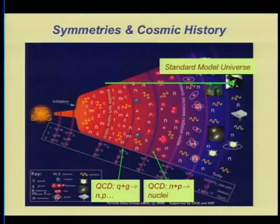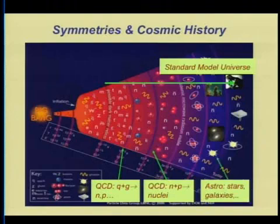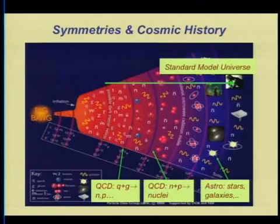Much later — minutes after the Big Bang — is when the hadrons, neutrons and protons, were confined into atomic nuclei. Then hundreds of thousands of years later was the formation of large-scale structure that leads to our existence: stars, planets, galaxies, and so forth. The standard model does a very good job of describing the microphysics of these various eras in cosmic history.